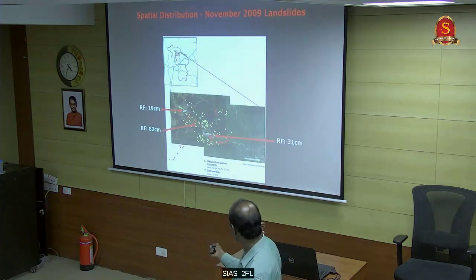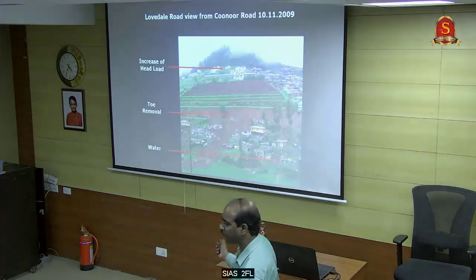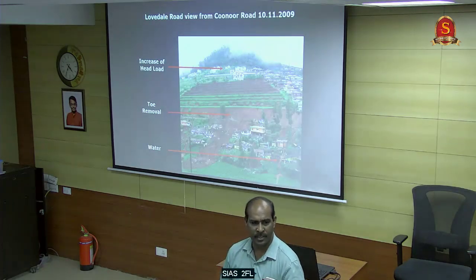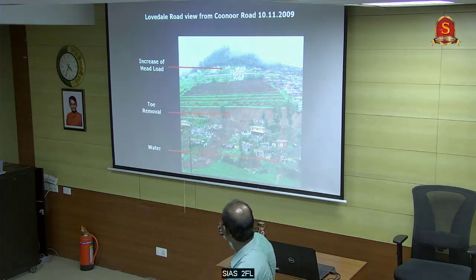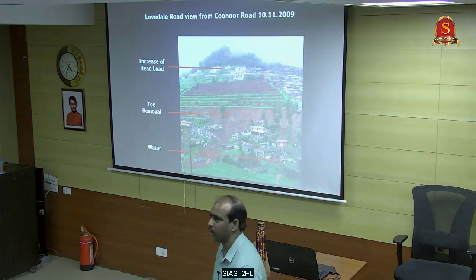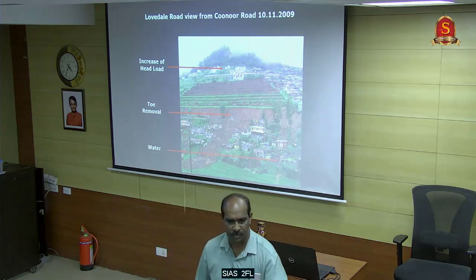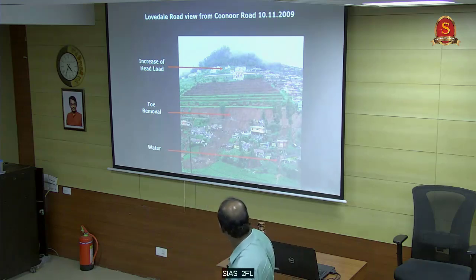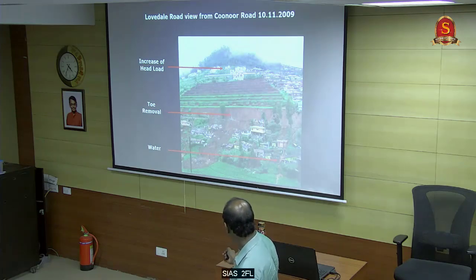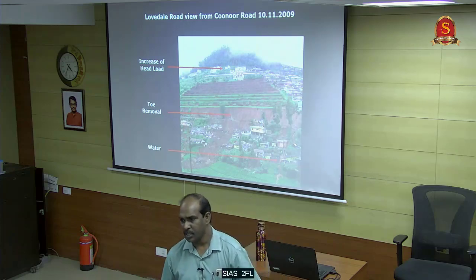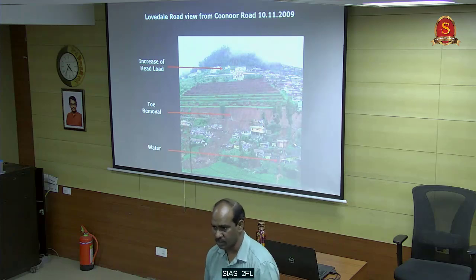This is November 2009 - we had a lot of landslides. This is a place called Lovedale Road near Coonoor. The landslide happened on 9th November 2009. We reached one day later. These are structures constructed at the top, and this is the area where the landslide occurred. Some 4-5 houses were totally washed away - 6 people died at this particular location.